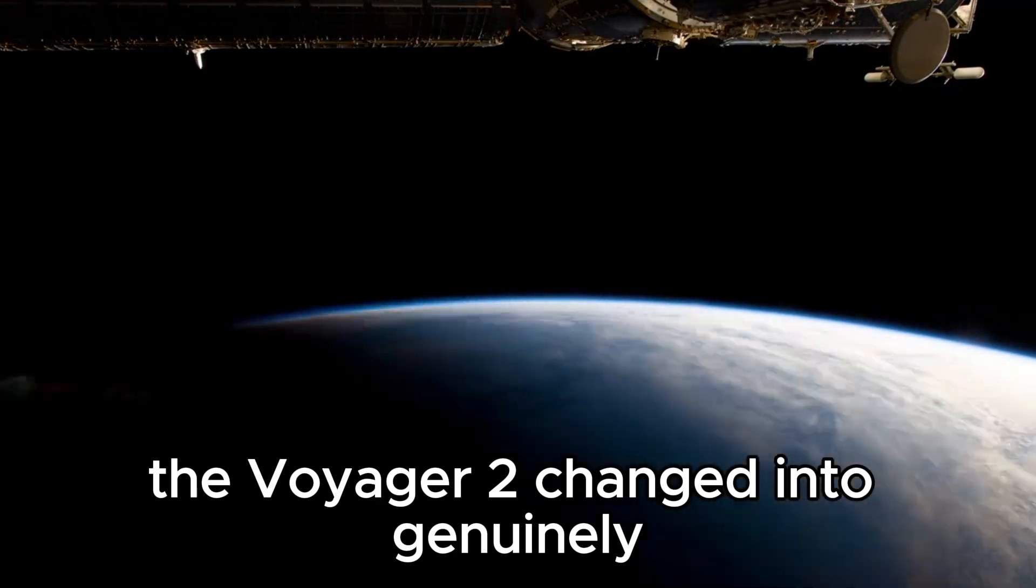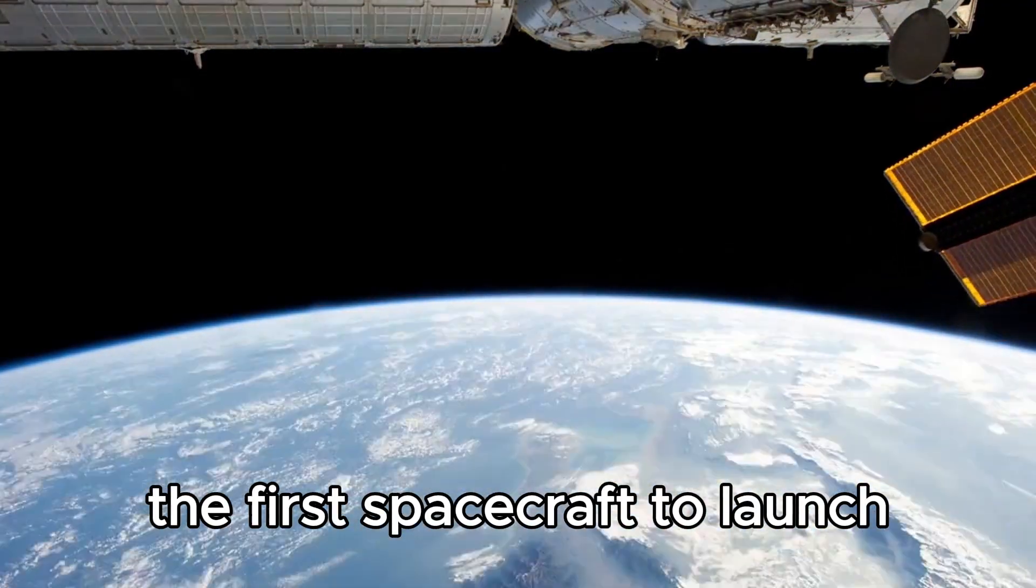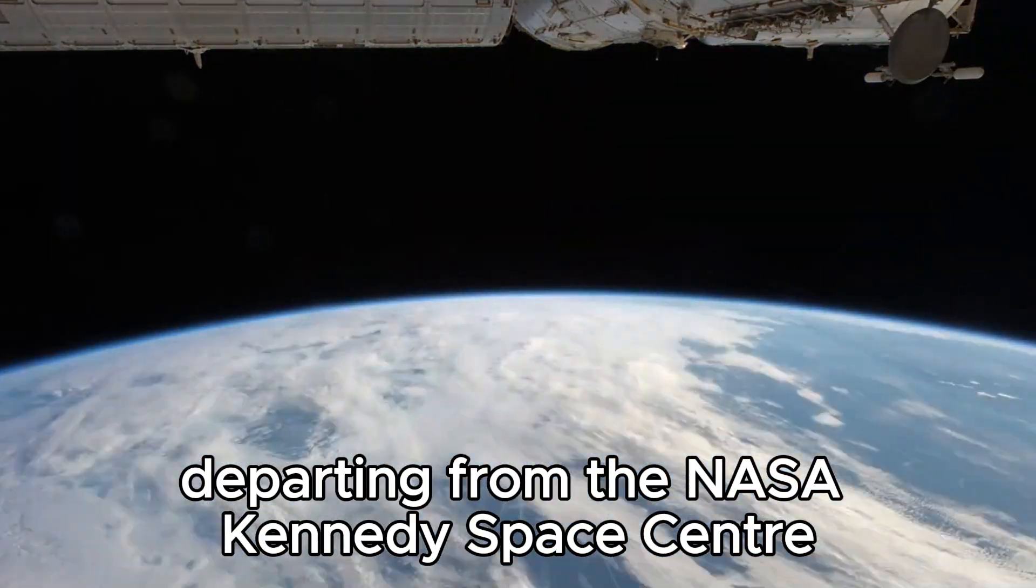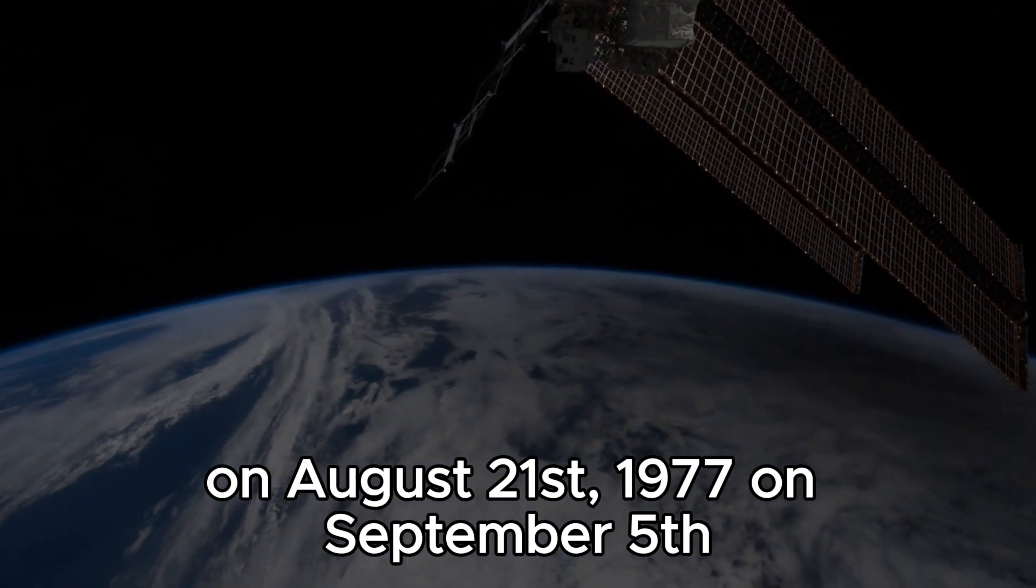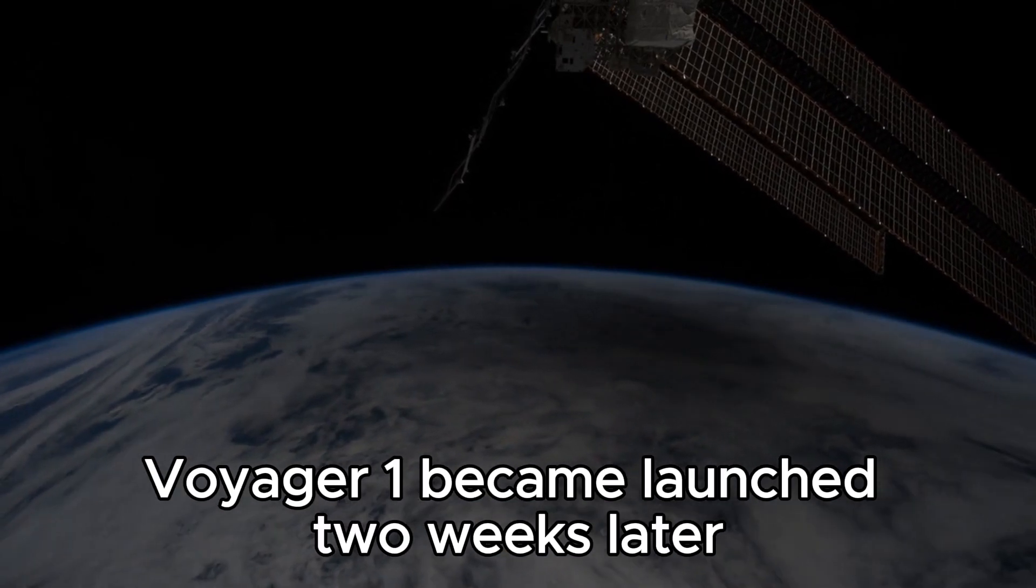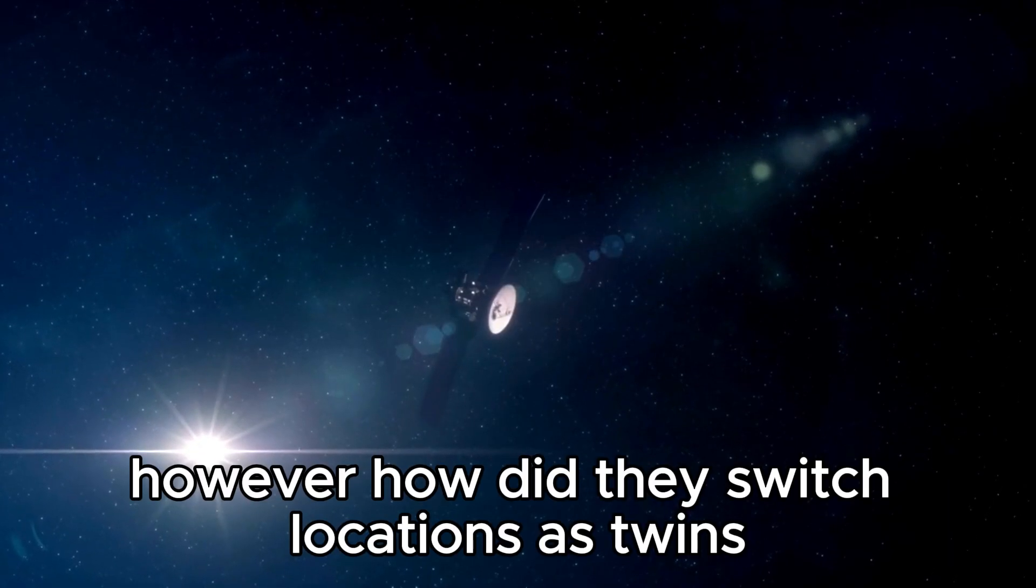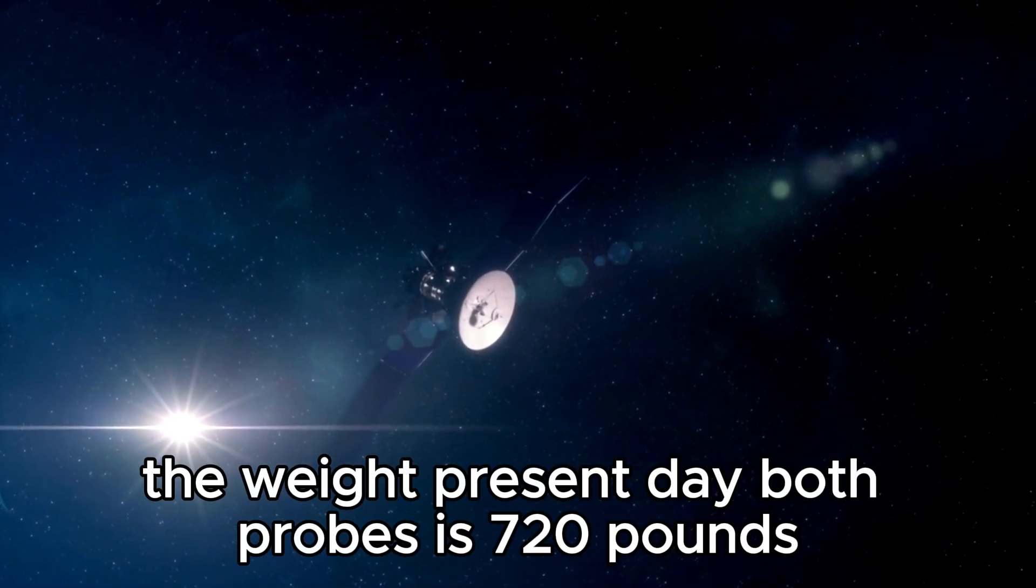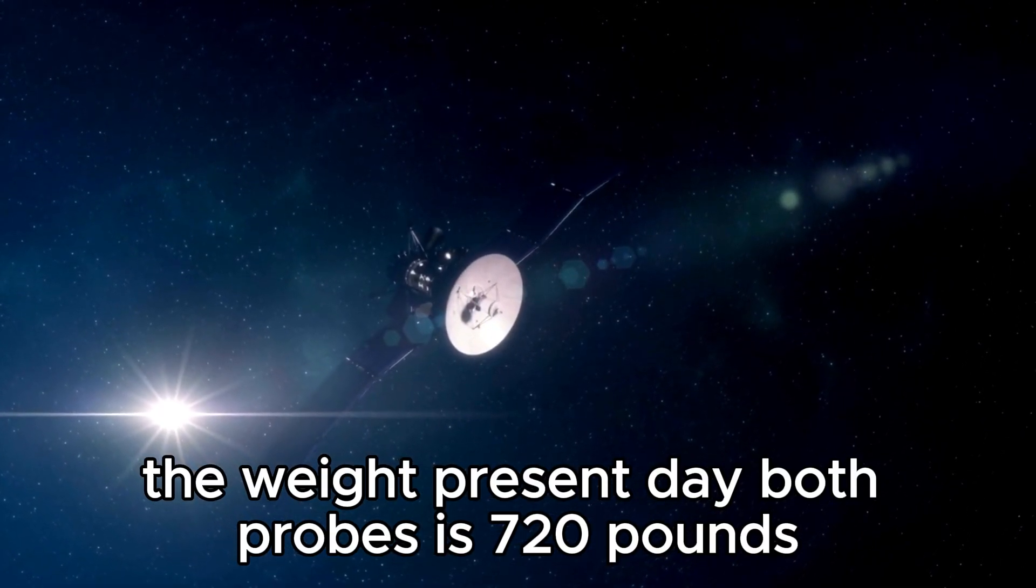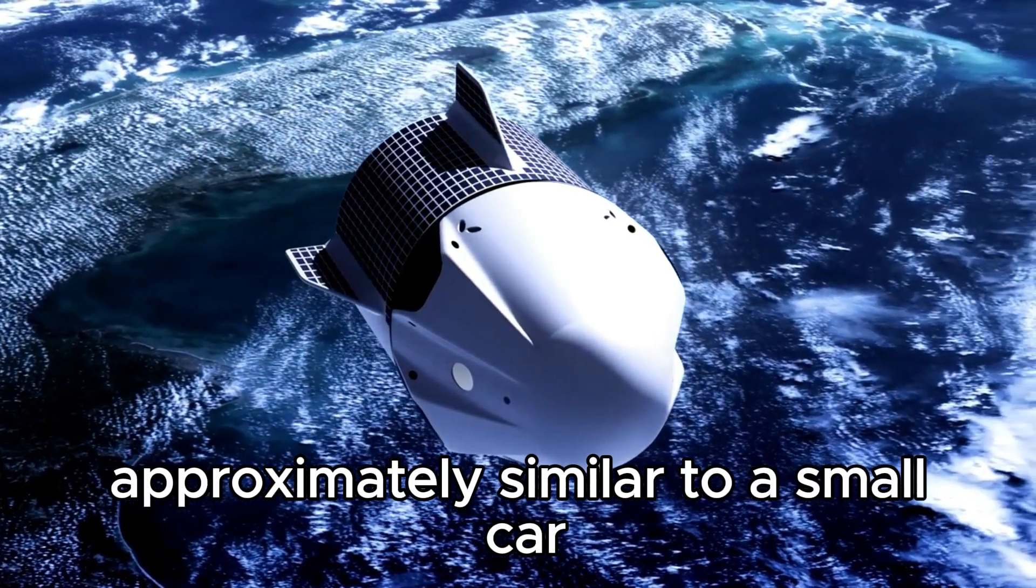The Voyager 2 was actually the first spacecraft to launch, departing from the NASA Kennedy Space Center on August 21, 1977. On September 5 of that same year, Voyager 1 was launched two weeks later. However, how did they switch locations as twins? The weight of both probes is 720 pounds, approximately similar to a small car.